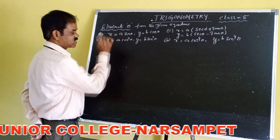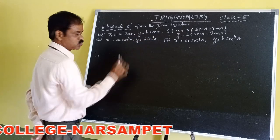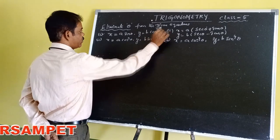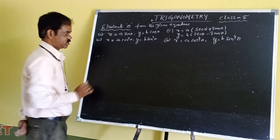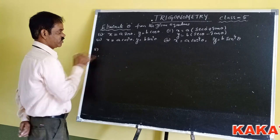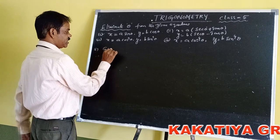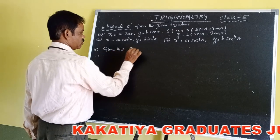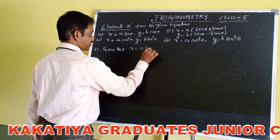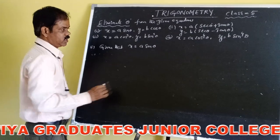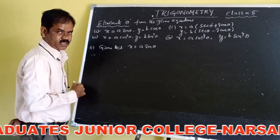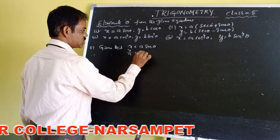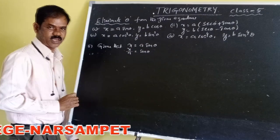The first problem: x is equal to a·sinθ, y is equal to b·cosθ. Eliminating theta from these two equations. Given that x = a·sinθ. Taking a to the other side, it becomes x/a = sinθ.